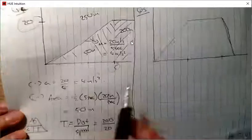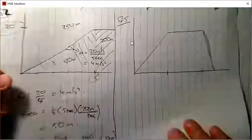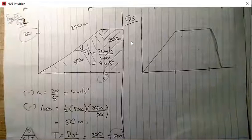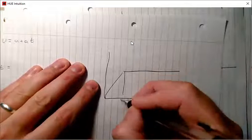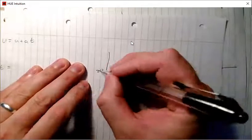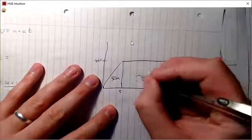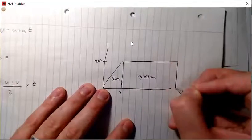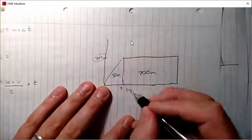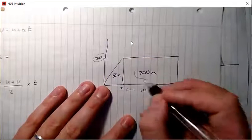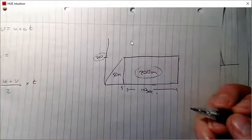Another way to approach this: if you redraw the graph correctly — five seconds on the time axis, 20 on the velocity axis — you can see the 50 meters in the first triangle, then a rectangle for the 200-meter constant-speed section. Twenty multiplied by 10 gives those 200 meters, so you could read the 10 seconds directly off the graph as well.